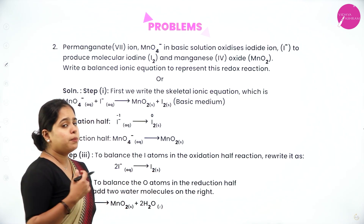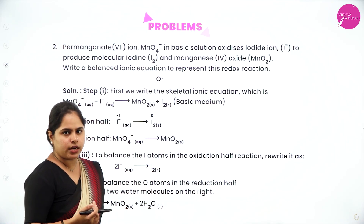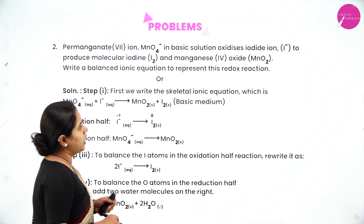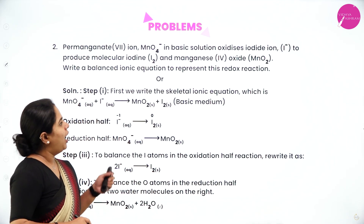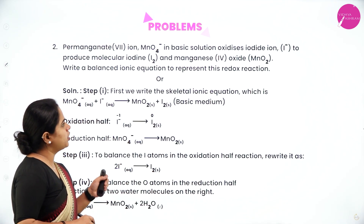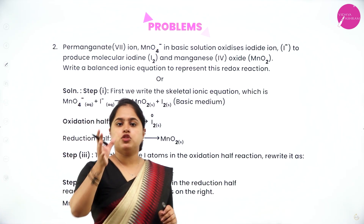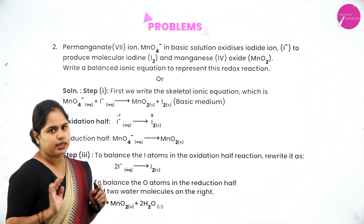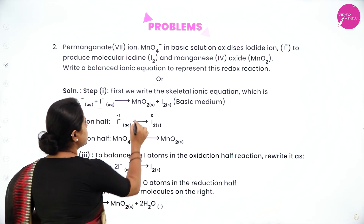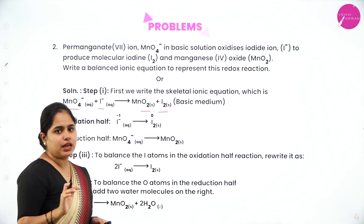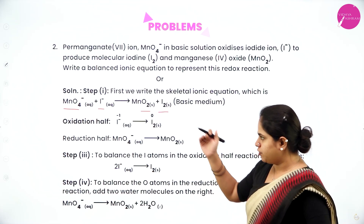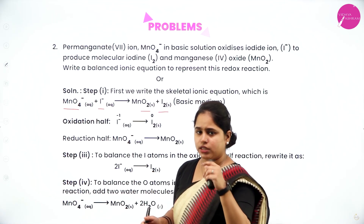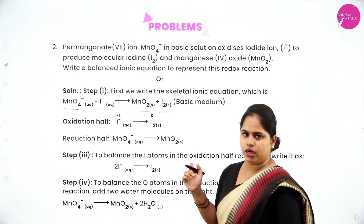Now let's take an example in basic medium. Permanganate ion MnO₄⁻ in basic solution oxidizes iodide ion I⁻ to produce molecular iodine I₂ and manganese oxide MnO₂. We need to write a balanced ionic equation for this redox reaction. The skeletal equation is: MnO₄⁻ + I⁻ → MnO₂ + I₂, and it is given that it is in basic medium. The first few steps will be the same, with a small change in procedure for the basic medium.